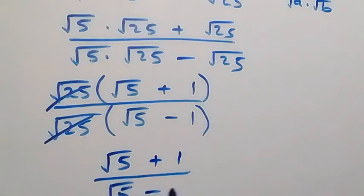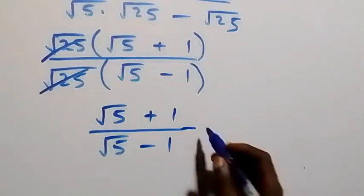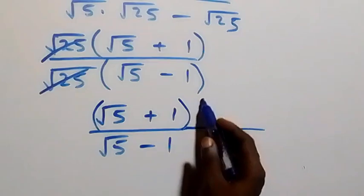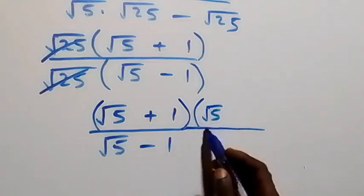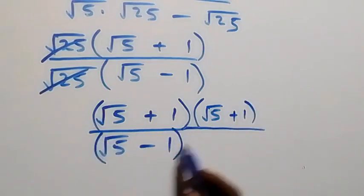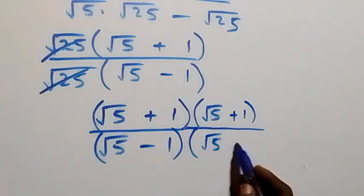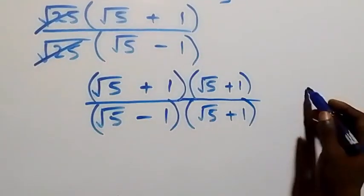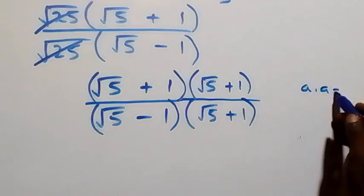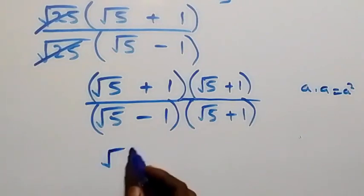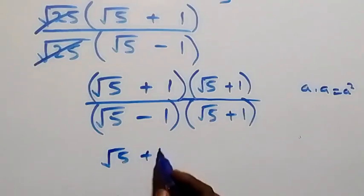From here we can rationalize this by multiplying with the conjugate. So we multiply by (root 5 plus 1) over (root 5 plus 1). Since we're multiplying the same thing, the numerator becomes (root 5 plus 1) squared.